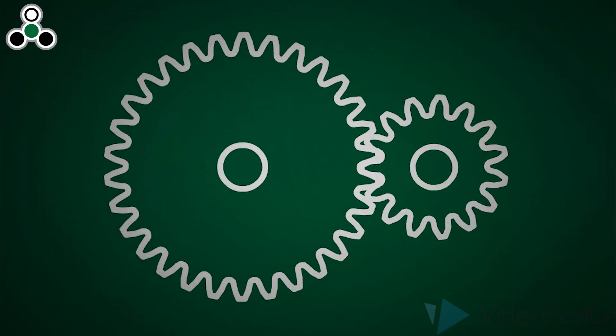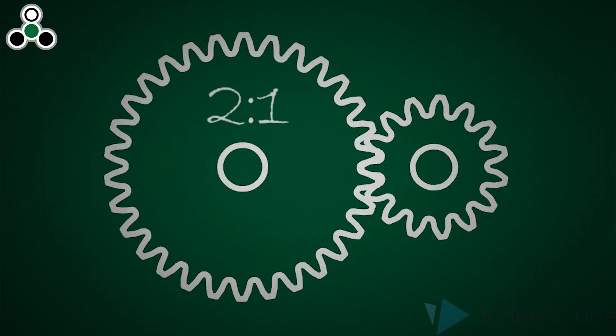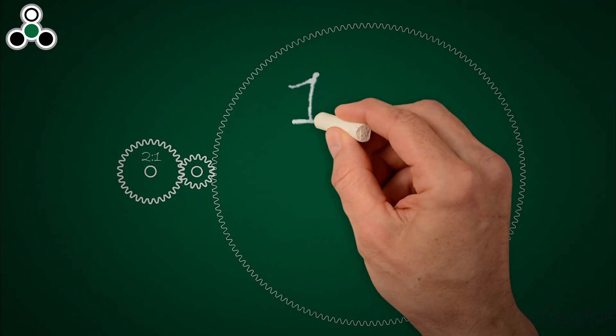A gearbox you probably already know about is the parallel axis drive. It's basically any two gears put together, and it's a great way to get a low ratio like 2 to 1. You can actually use it to get any ratio, but if that gets too high, things can get kind of silly.